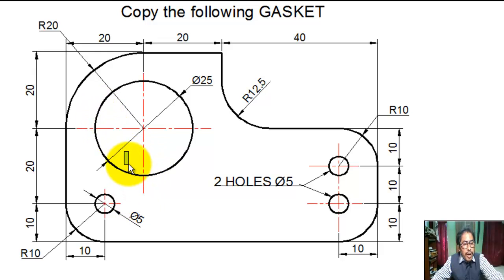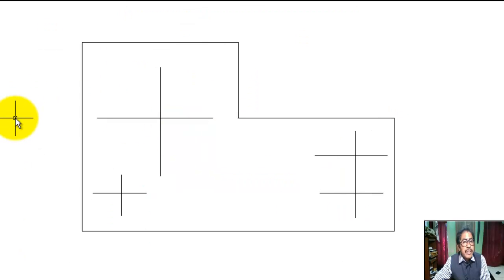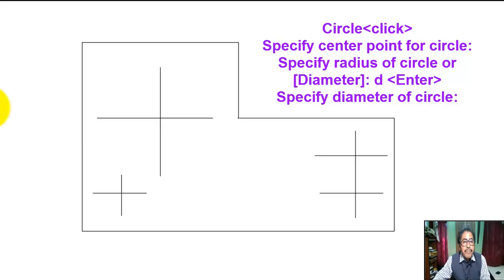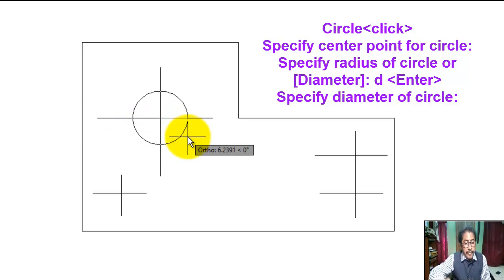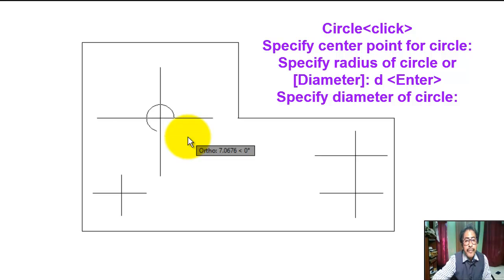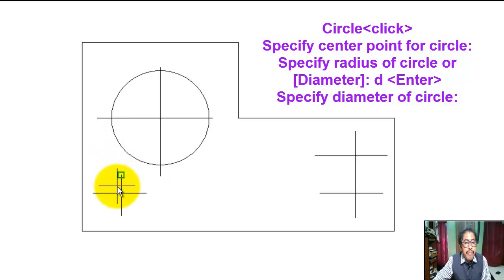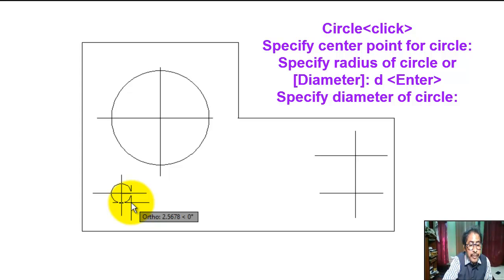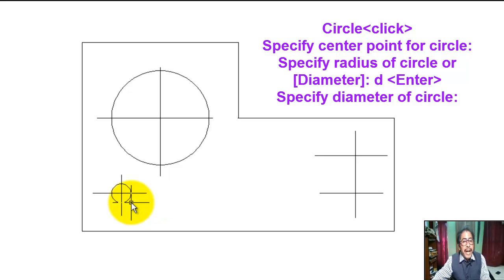Now we draw the circles. Click on circle command, specify center point, type D for diameter, diameter of the circle is 25. Now click on circle again, specify center point, radius of the circle is 2.5, so diameter is 5 — type D, then type 5.